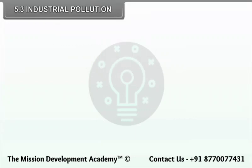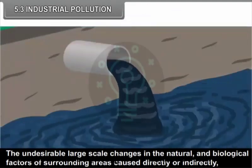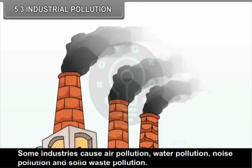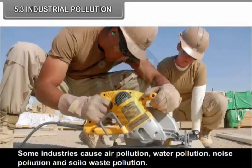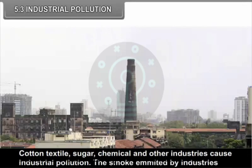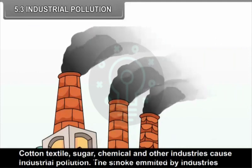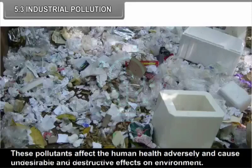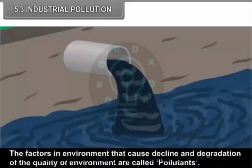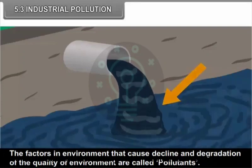The undesirable large-scale changes in the natural and biological factors of the surrounding areas caused directly or indirectly by various industries is called industrial pollution. Some industries cause air pollution, water pollution, noise pollution and solid waste pollution. Industrial pollution adversely affects various ecosystems. Cotton textile, sugar, chemical and other industries cause industrial pollution. The smoke emitted by industries, water and solid waste contain pollutants. These pollutants affect human health adversely and cause undesirable and destructive effects on the environment. Factors in the environment that cause decline and degradation of the quality of environment are called pollutants.